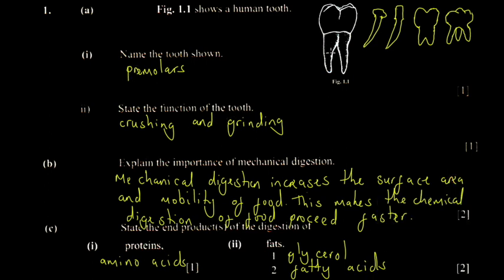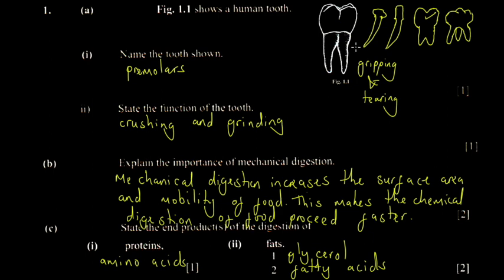You're asked to state the function of the tooth. The function of the premolar is to crush and grind food. The canine tooth is for gripping and tearing — it's the animalistic tooth because animals eat their meat raw, so they grip onto prey and tear it apart. The incisor is for cutting food.